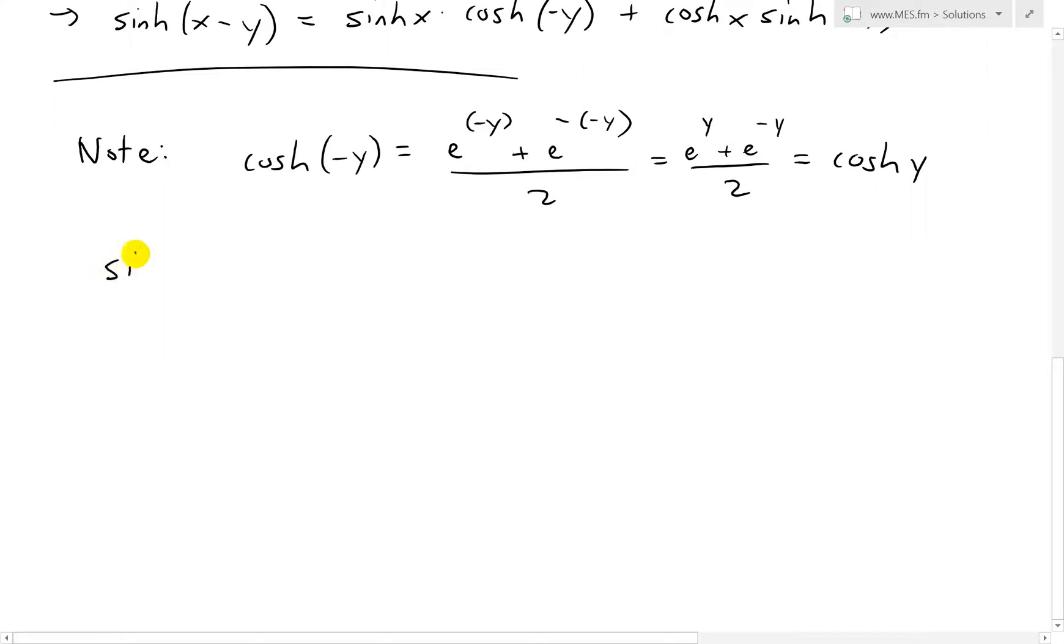And then for sinh, it's going to be similar. So sinh negative y equals to the e to the negative y by definition. Then minus, instead of plus, we minus e to the negative, negative y. Then move the positive y now in the front. This is divided by 2. Equals to e to the y. This is going to be negative e to the y and then plus e to the negative y. So that's a negative sign there.